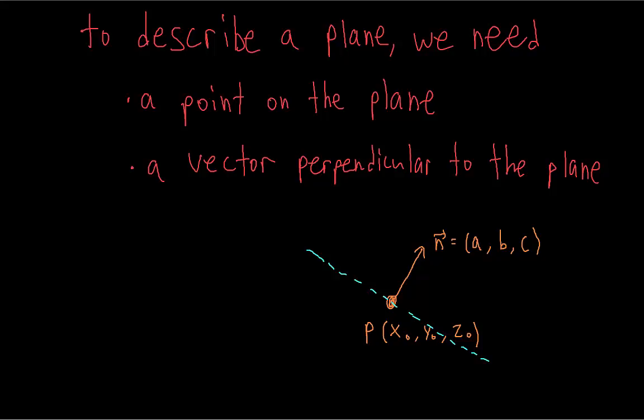Here we have the normal vector with its components a, b, and c, which just stand for random numbers. Now the question is: can we find an equation to describe all the points on this plane? We want an equation involving any arbitrary point along this plane, so we're going to pick a point Q which has coordinates x, y, and z.